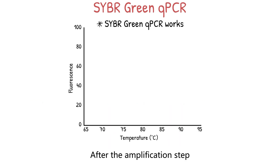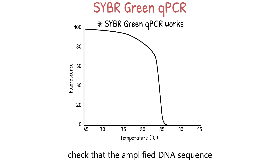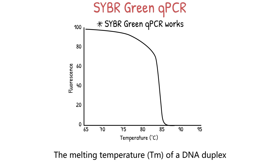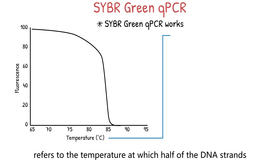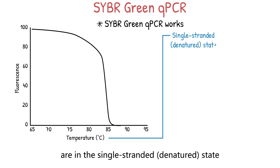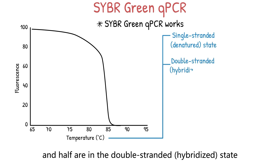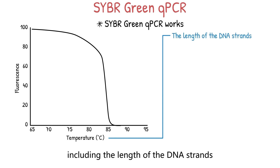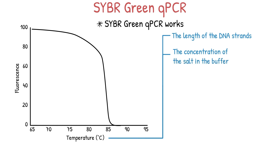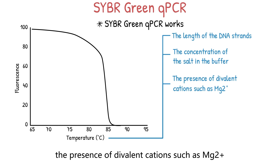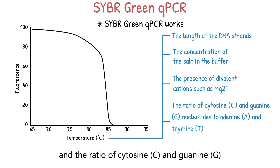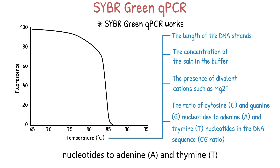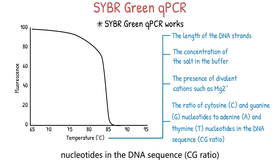After the amplification step, we perform a melting curve analysis to verify that the amplified DNA sequence is the one we're interested in. The melting temperature, TM, refers to the temperature at which half of the DNA strands are in the single-stranded denatured state and half are in the double-stranded hybridized state. TM is affected by several factors, including the length of the DNA strands, salt concentration in the buffer, the presence of divalent cations such as magnesium 2+, and the ratio of cytosine-guanine to adenine-thymine nucleotides, also known as the CG ratio.